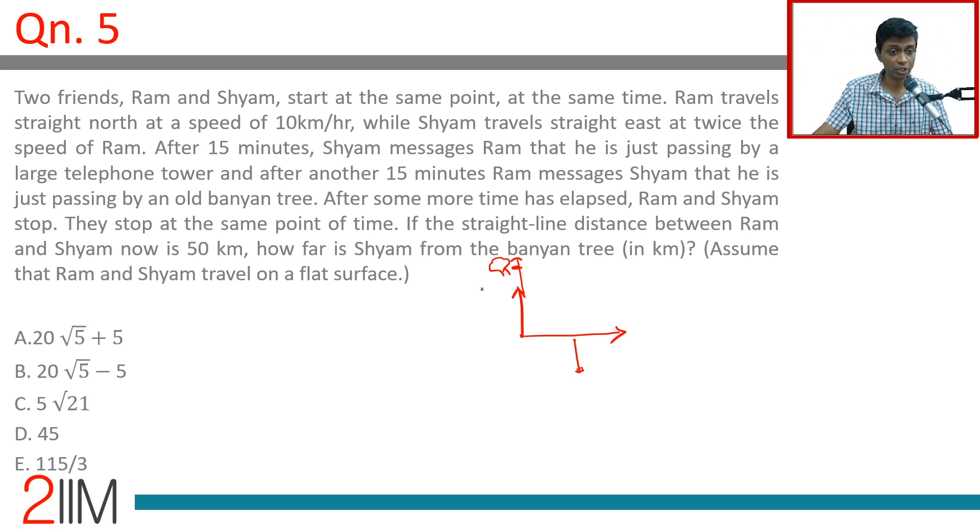The straight line distance between Ram and Shyam now is 50 kilometers. How far is Shyam from the banyan tree in kilometers?